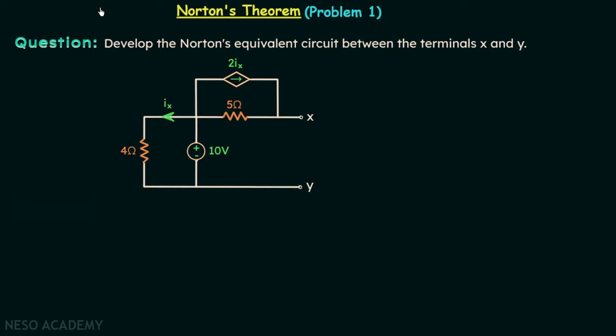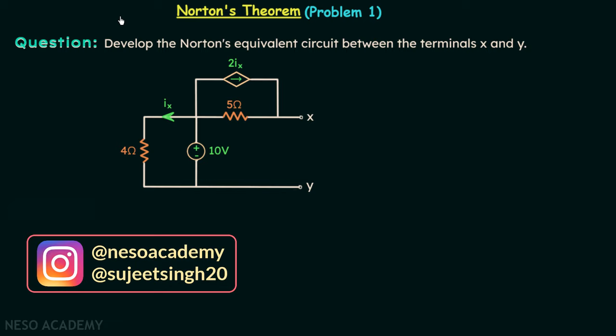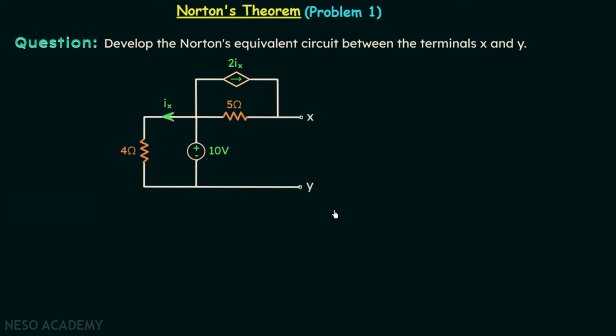In this lecture we are going to solve one question on Norton's theorem. The network in the question will involve one dependent source, and therefore we are going to learn how to use Norton's theorem when the network has dependent sources present. According to the question we need to develop the Norton's equivalent circuit between the terminals x and y.